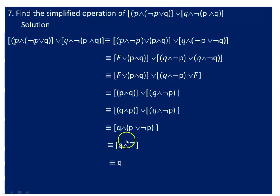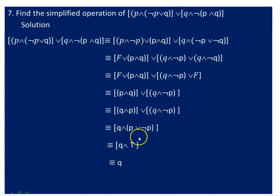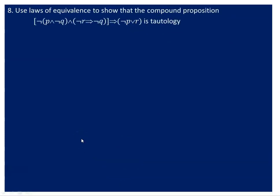If you simplify the compound proposition, it will be equivalent to Q. For any combination of true and false values applied to the compound proposition, the output is zero — meaning it evaluates consistently based on those values.